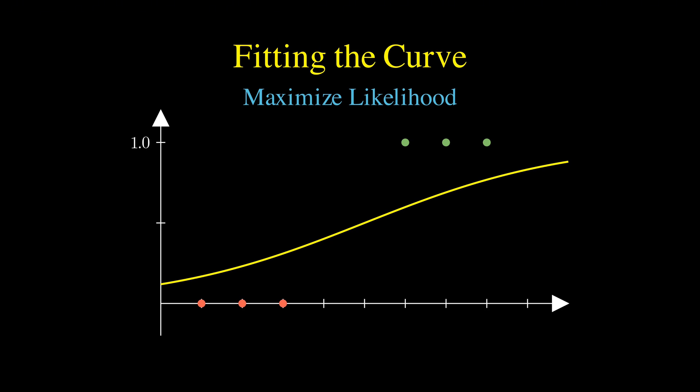Find a curve that assigns a high probability to the students who actually passed and a low probability to those who failed. The algorithm iteratively adjusts the position and steepness until it locks onto the curve that best explains the data we observed.